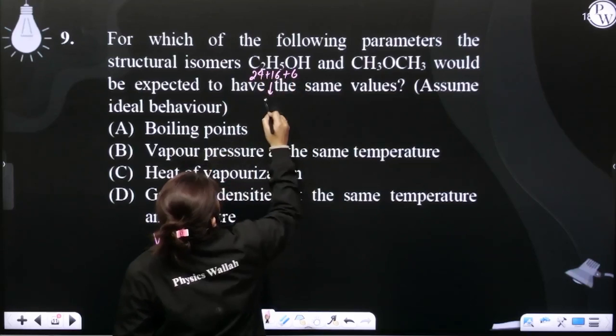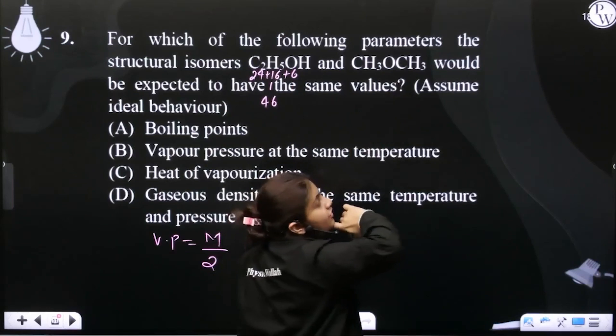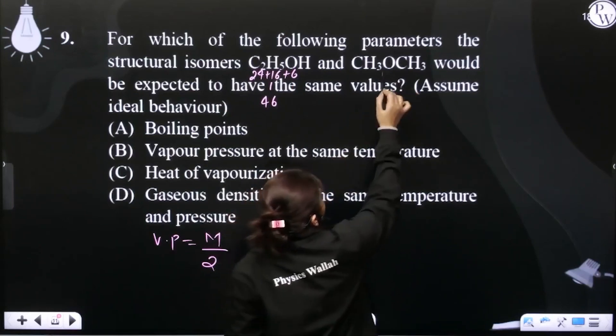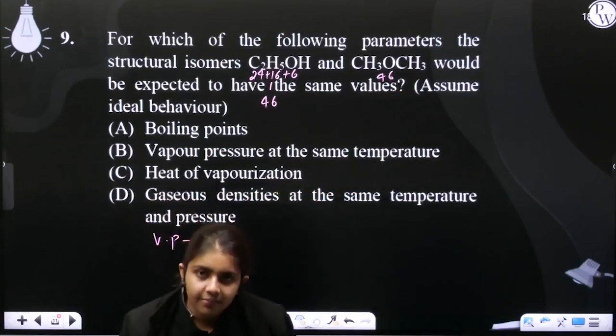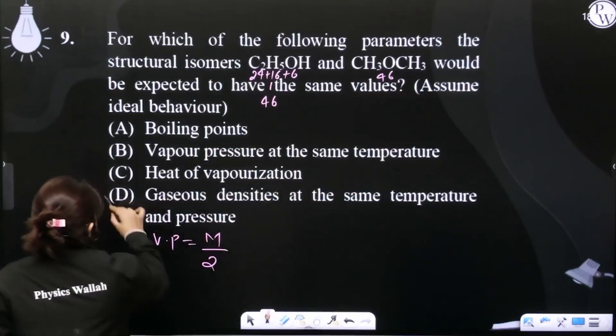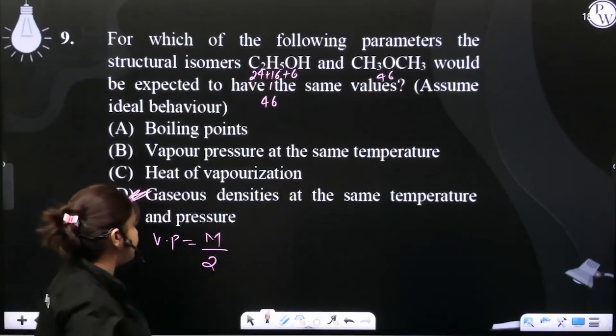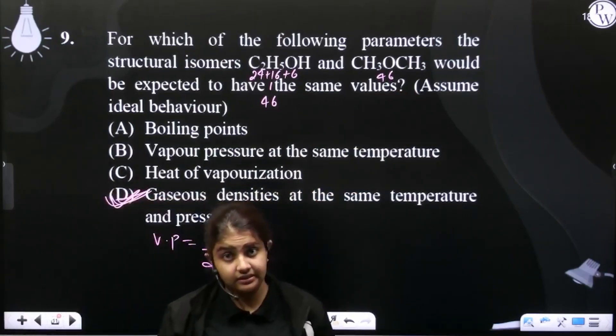50, 30, 40, 46. Okay, 24 and 16 is 40, and 6 is 46. So both molecular weights are the same - vapor density is the same at the same temperature and pressure.